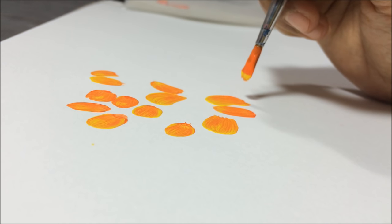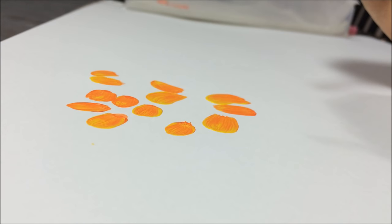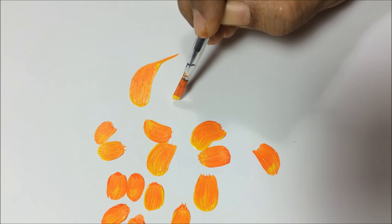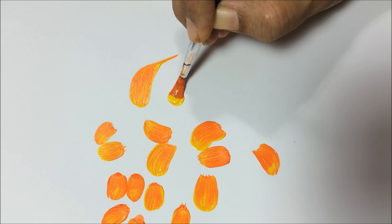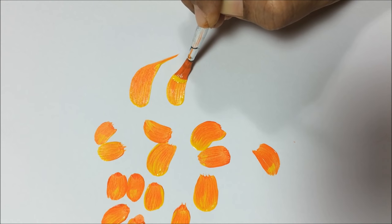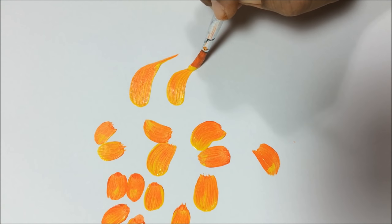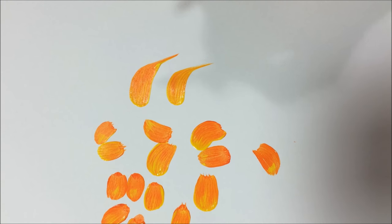So the difference between these two strokes is the path the brush travels. One has a straight path and another has a curve path - that's the only difference.